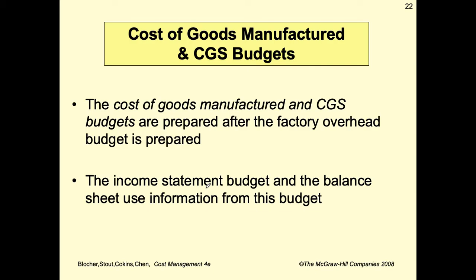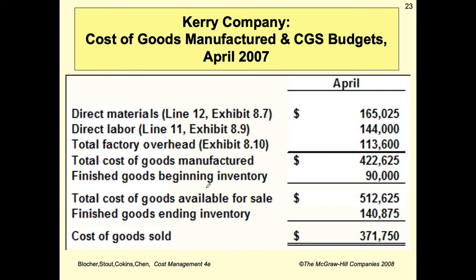The cost of goods manufactured and cost of goods sold budget are prepared after the factory overhead budget is completed. The income statement budget and balance sheet use information from this budget.